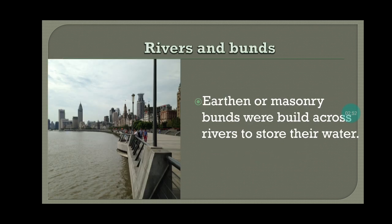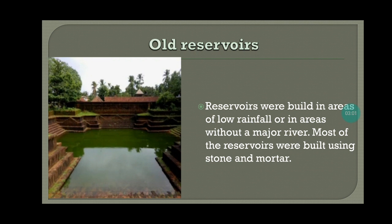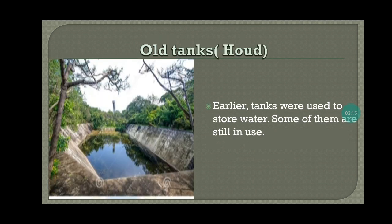Rivers and bunts: earthen or masonry bunts were built across rivers to store their water. Old reservoirs: reservoirs were built in areas of low rainfall or in areas without a major river, and most were built using stone and mortar. Old tanks, that is hout: earlier tanks were used to store water, and some of them are still in use.